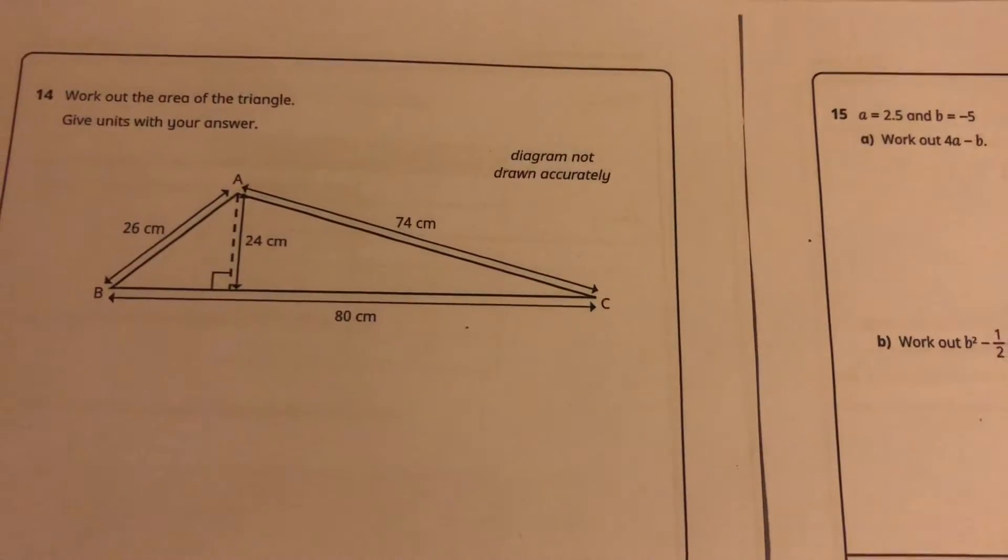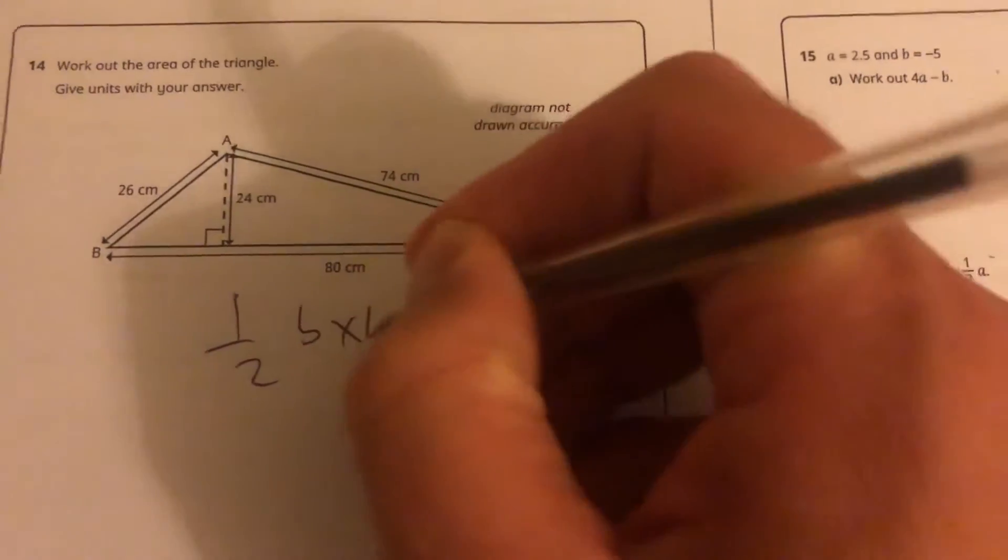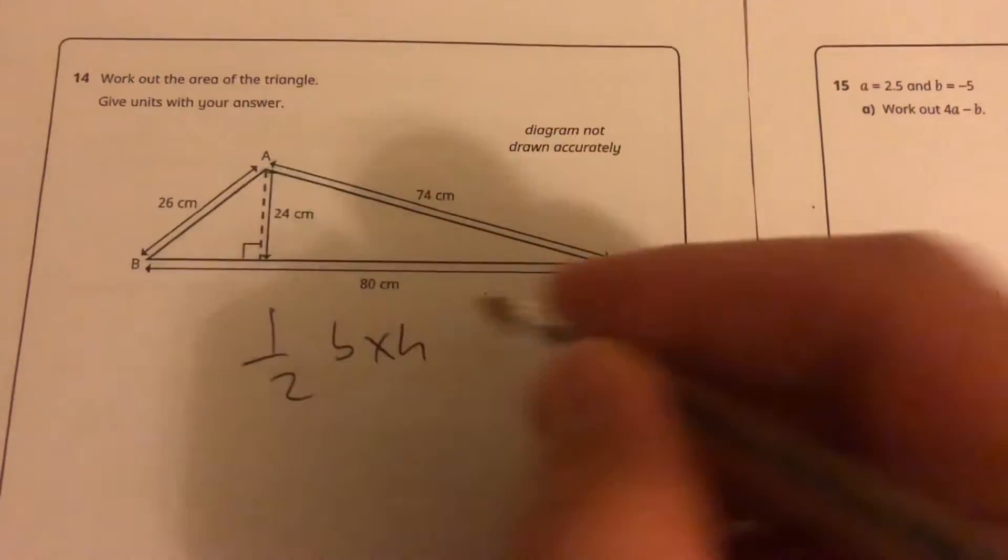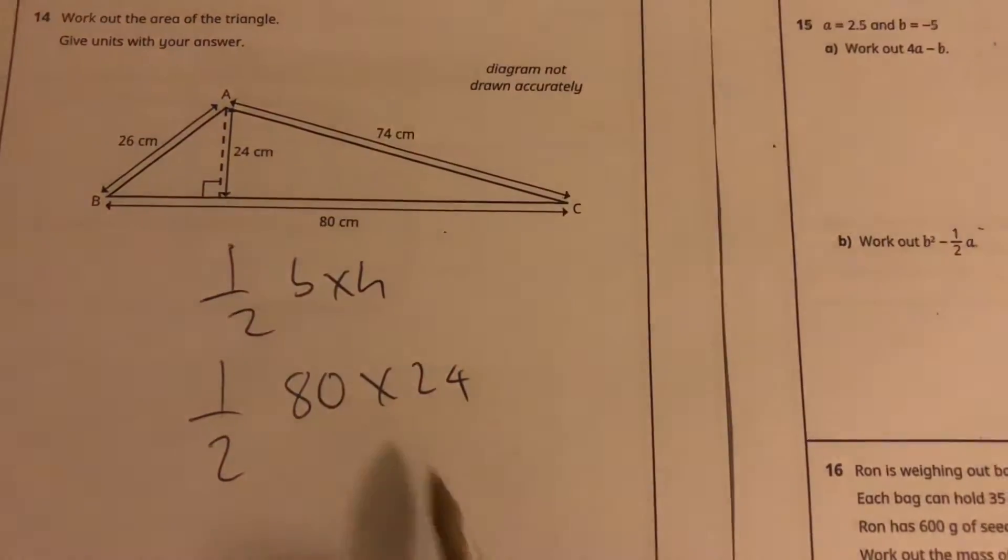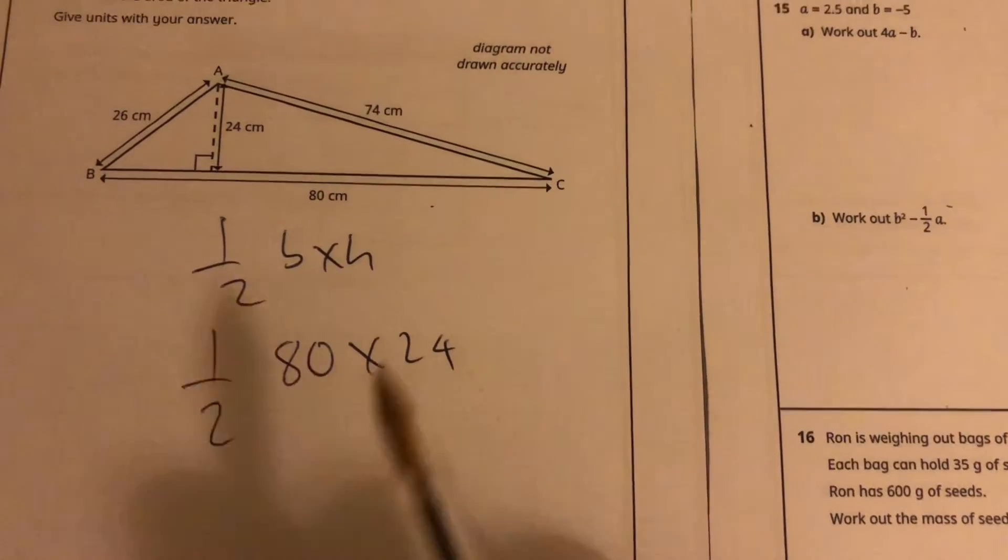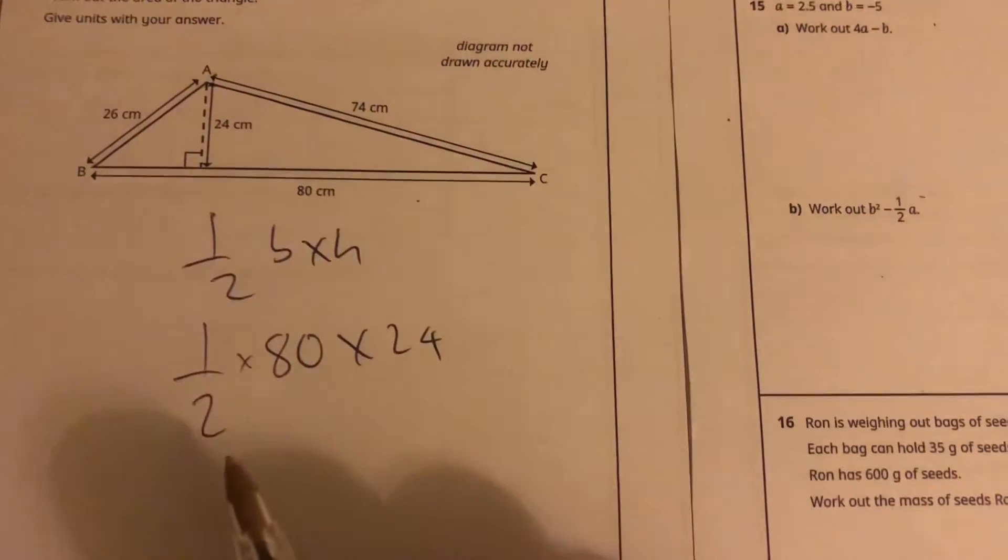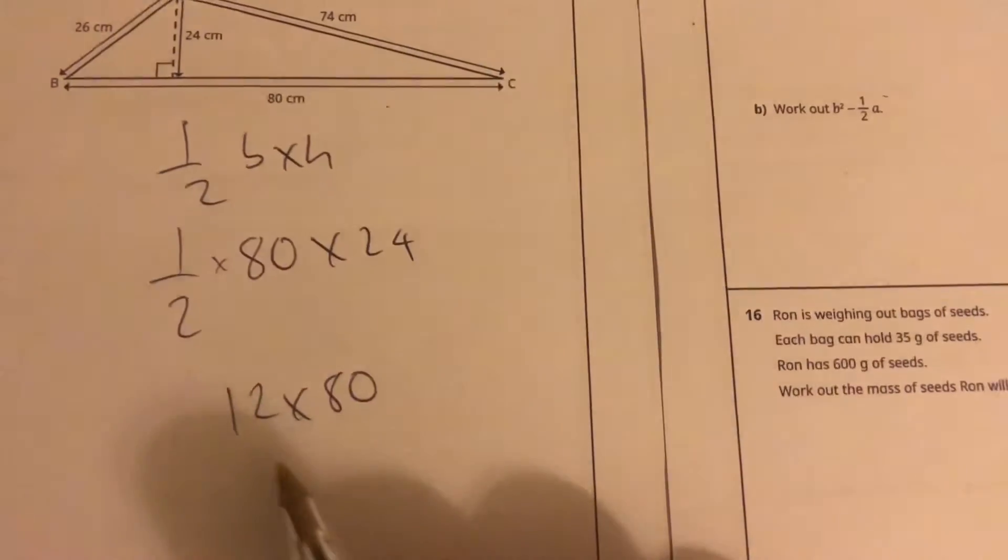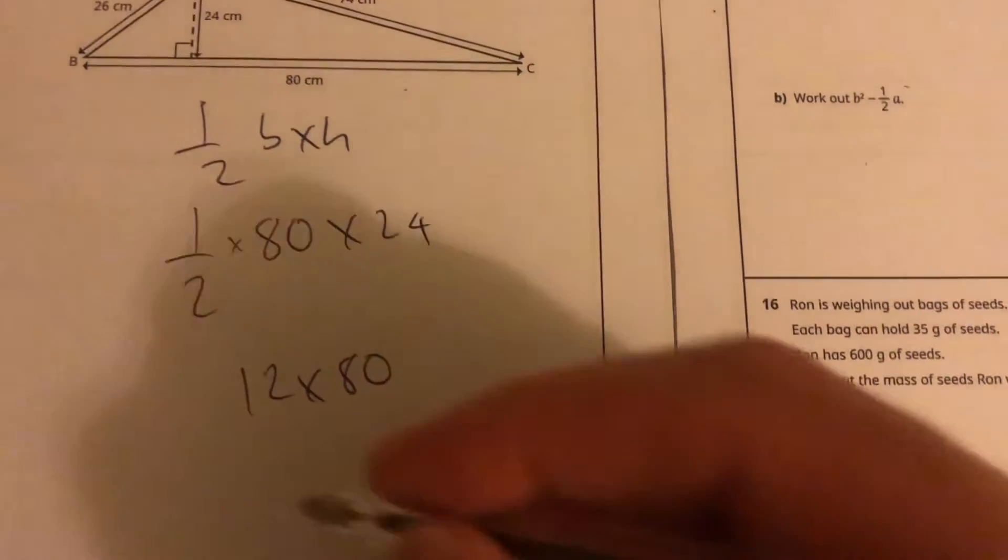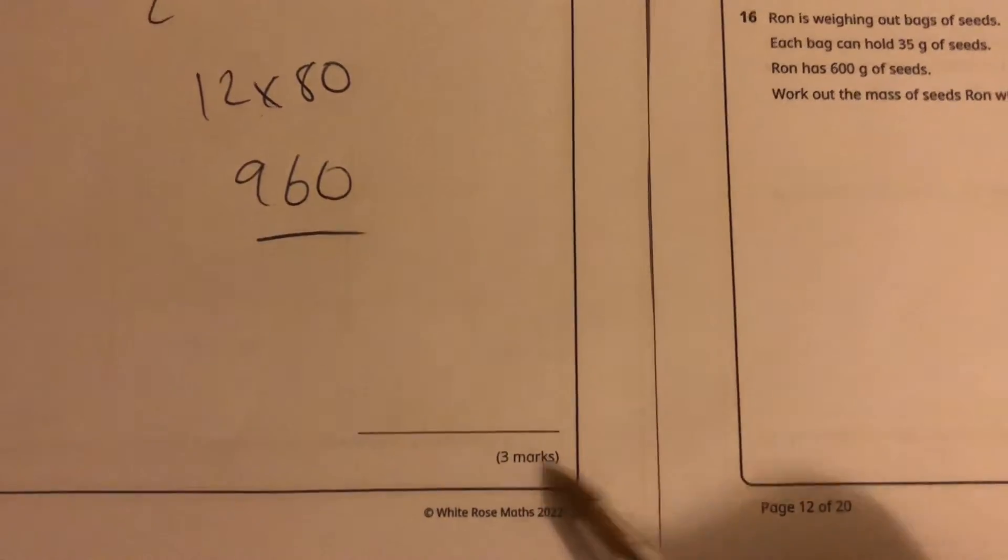Here we go. Work out the area of a triangle - half base times height. They've given us the base of 80. Half of 80 times 24. I'm not using a calculator, so I'm going to use my factors and knowing how to multiply. Half of 24 is 12, 12 times 80. 12 times 8 is 96 plus the 10. Hopefully that's 960. Actually did a three mark question there.